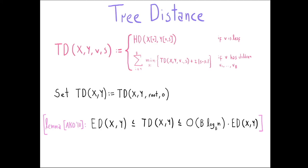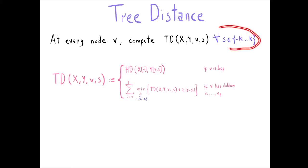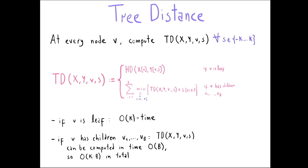The key lemma, shown by Andoni, Krautgammer, and Onak, is that the tree distance is a good approximation of the edit distance: it is lower bounded by the edit distance and upper bounded by b times the depth of the tree. The task now is: at every node v, compute the tree distance between x and y at that node for all shifts s in the set {-k, ..., k}. We can restrict to this range because we always pay for shift differences and are only solving a k vs. k·n^(o(1)) gap problem, so larger shifts don't help.